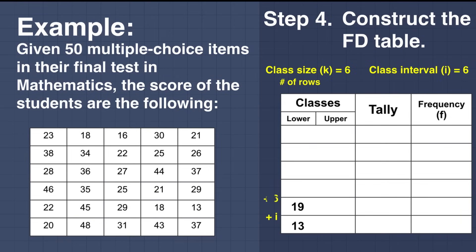Continuing to fill in the lower class limits by adding the interval of 6 each time: 19 plus 6 is 25; 25 plus 6 is 31; 31 plus 6 is 37; and 37 plus 6 gives the last value of 43.